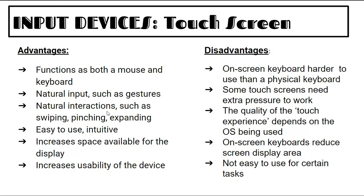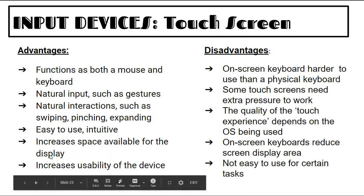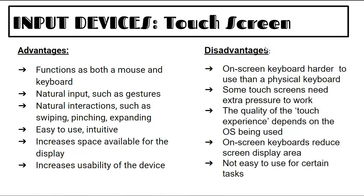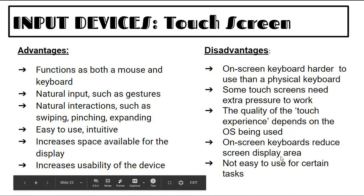Advantages of touch screen: functions as both mouse and keyboard, very natural to use with gestures — swipe, pinch, expand. Easier to use and very intuitive — even a two-year-old knows what to do. Increases space available for display. Disadvantages: on-screen keyboard is harder and slower than a physical keyboard. Some touch screens need extra pressure. Quality of touch experience depends on the operating system, and on-screen keyboards reduce display area.